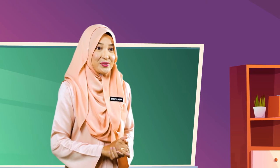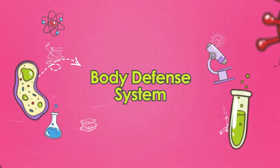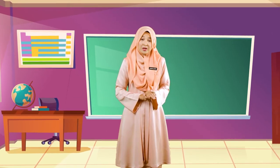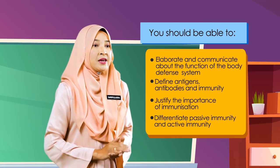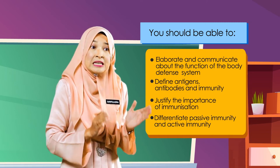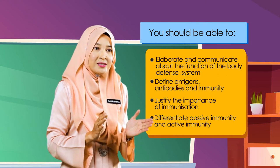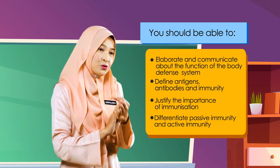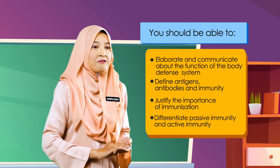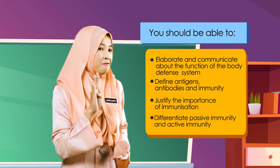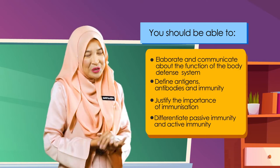Let us now learn about our body defense system. After this, you should be able to: elaborate and communicate about the function of the body defense system; define antigens, antibodies, and immunity; justify the importance of immunization; and differentiate between passive immunity and active immunity.